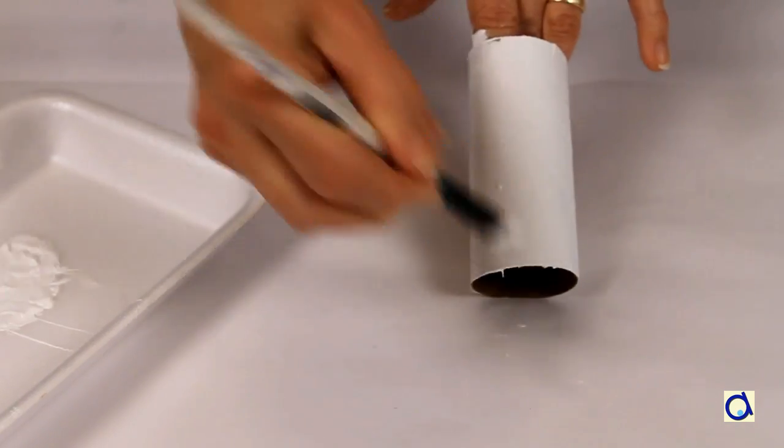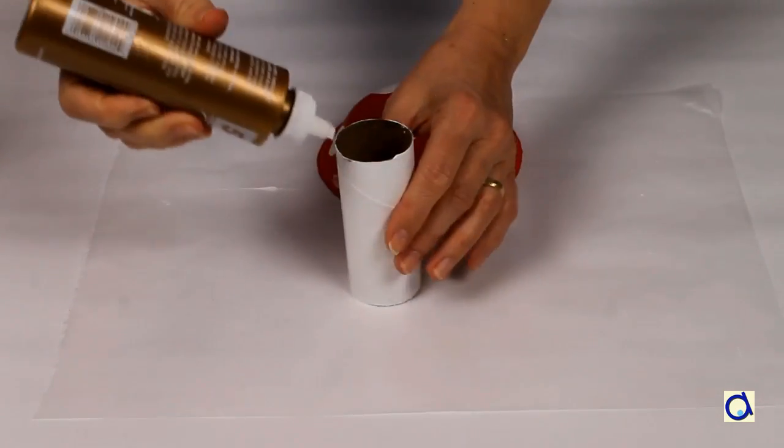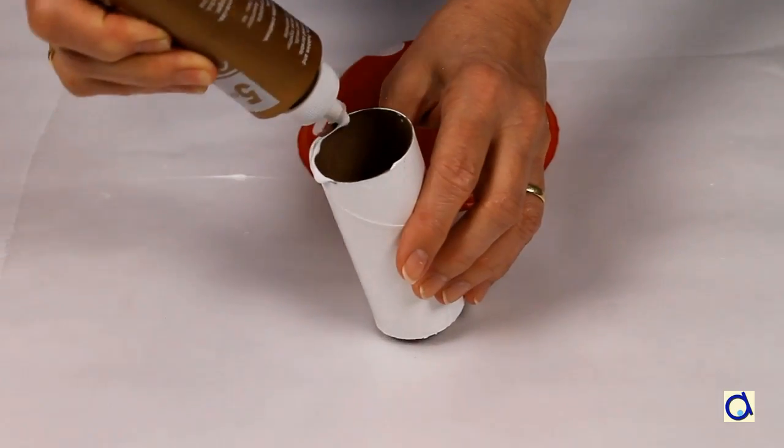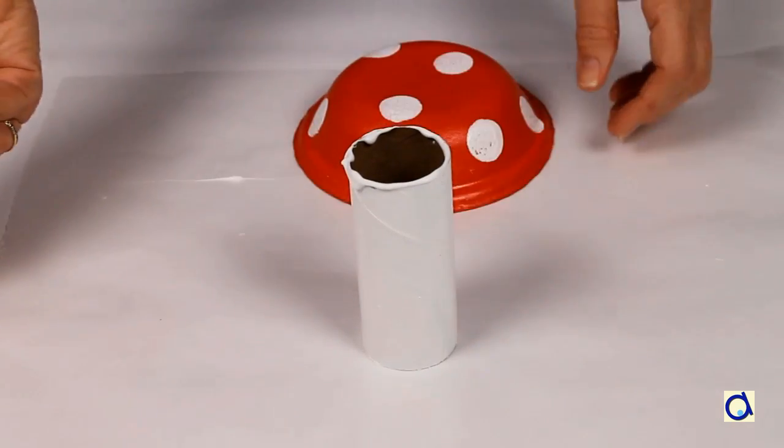Now it's time to assemble the two parts of the mushroom. Put white glue on the edge of the toilet paper roll and glue the tube in the centre of the ball. And there you have your first mushroom!